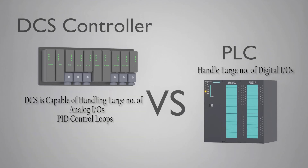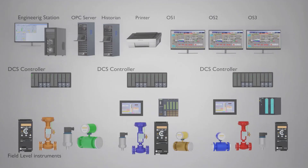Today we will explain the DCS concept with an easy-to-understand architecture. In a DCS network, you have different controllers for different areas. In a process plant, you have many areas. For example, in the oil and gas industry, we have well heads, a main unit, a sulfur recovery unit, and many more.